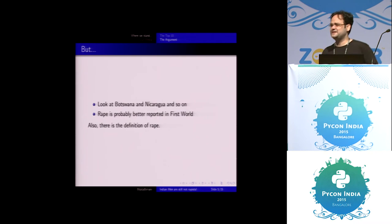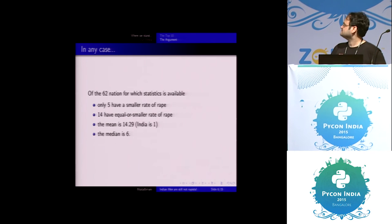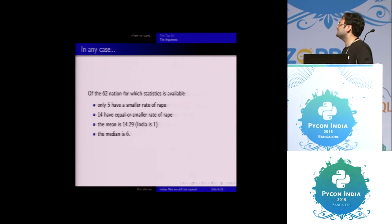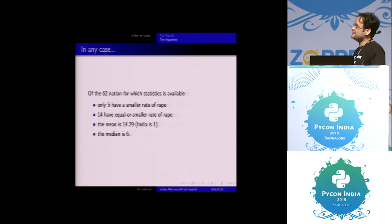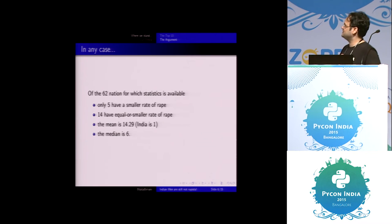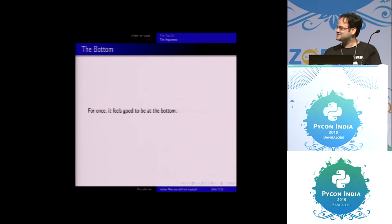Right. And also there's a definition of rape. And if you go by the way we define rape, it's actually quite conservative. So it's all inclusive. And if you anyway look at it, so the data was available for about 62 nations. Only five have a smaller rate of rape. 14 have equal or smaller. And the mean is like 14.29. And India is just one out of every one lakh population. And the median is kind of six. So you know, we are not particularly bad. And we are pretty much in the bottom. And for once, it feels good to be in the bottom.